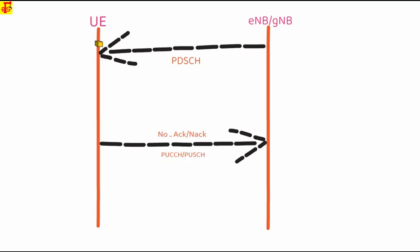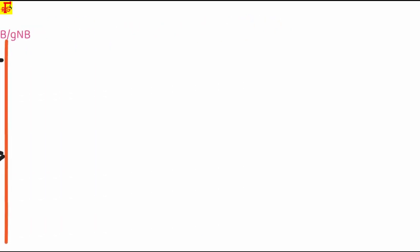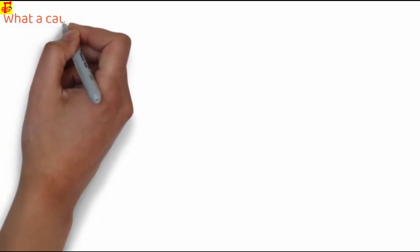So in this case, eNodeB physical layer indicates DTX for that HARQ. So what are the causes of DTX? There are many reasons, and I will try to explain a few reasons.